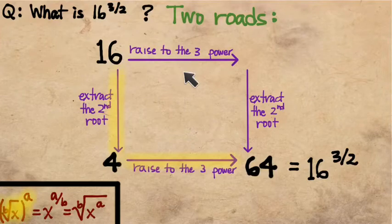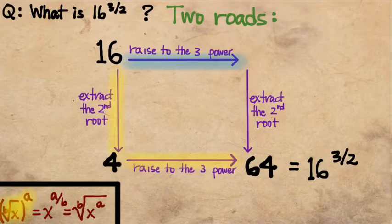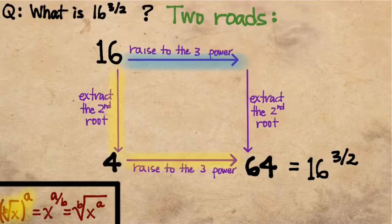If we decided to walk the other road, we would get the same answer, but we would go through a different intermediate step. If I did it that way, then the first thing I would do is I would raise 16 to the third power. So I would compute 16 times 16 times 16. I'll spare you the calculator. I think we get 2,048. No, I'm sorry, 4,096.